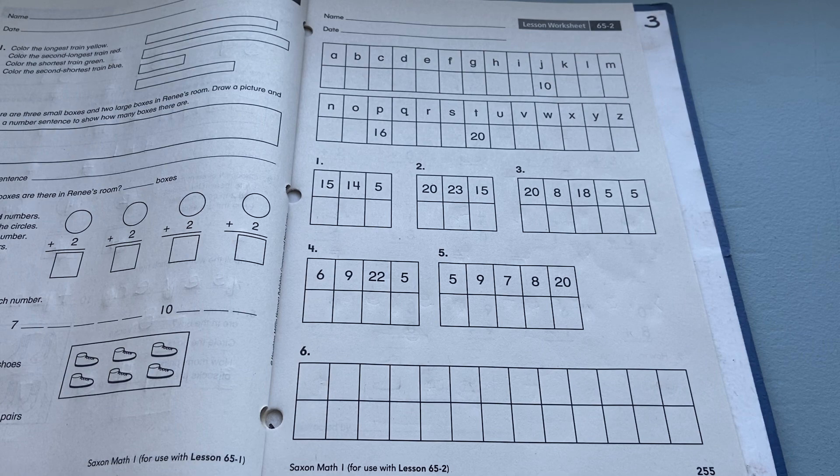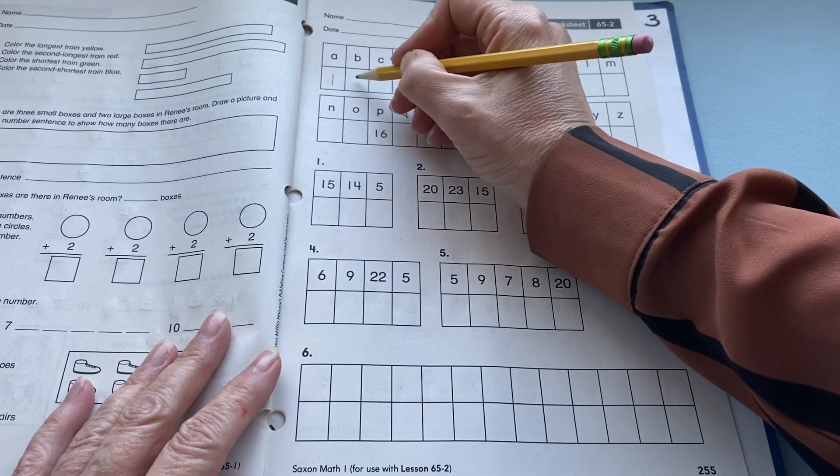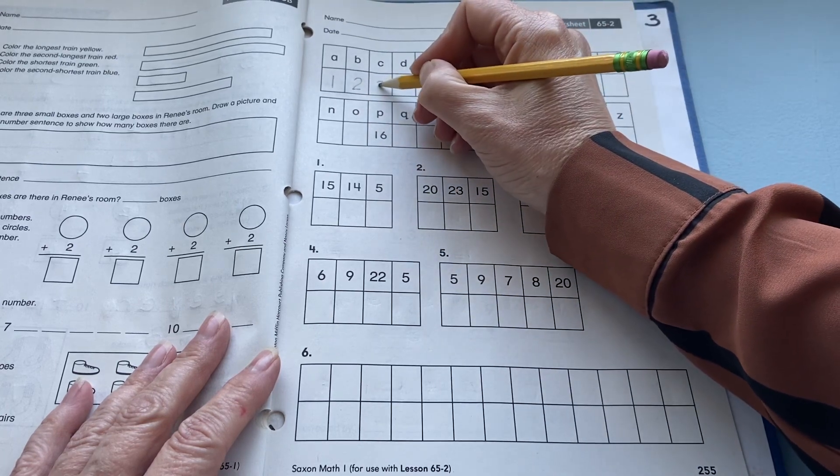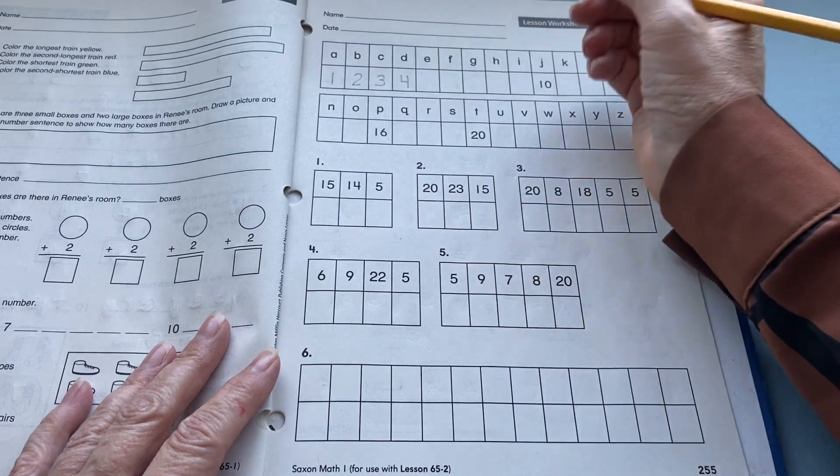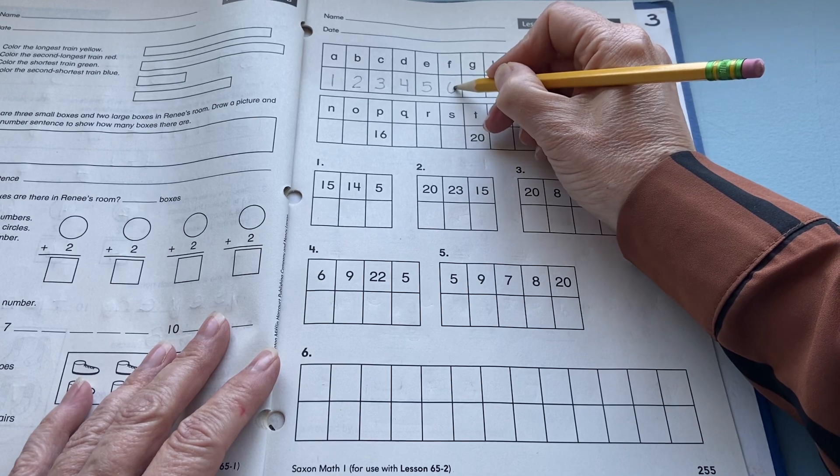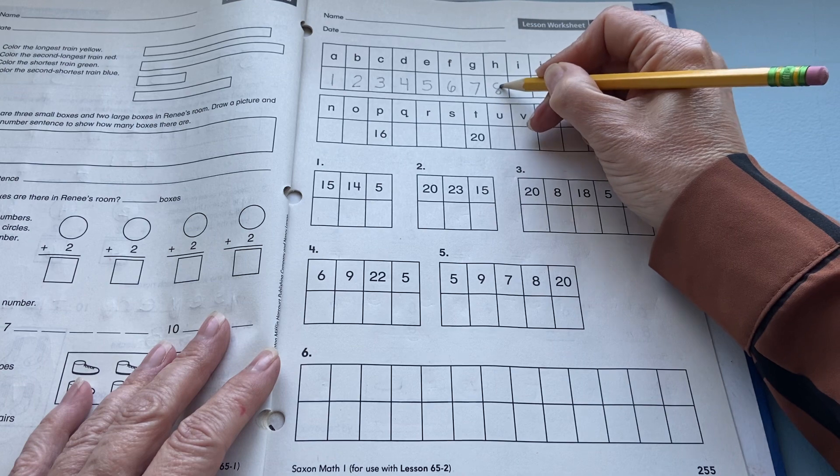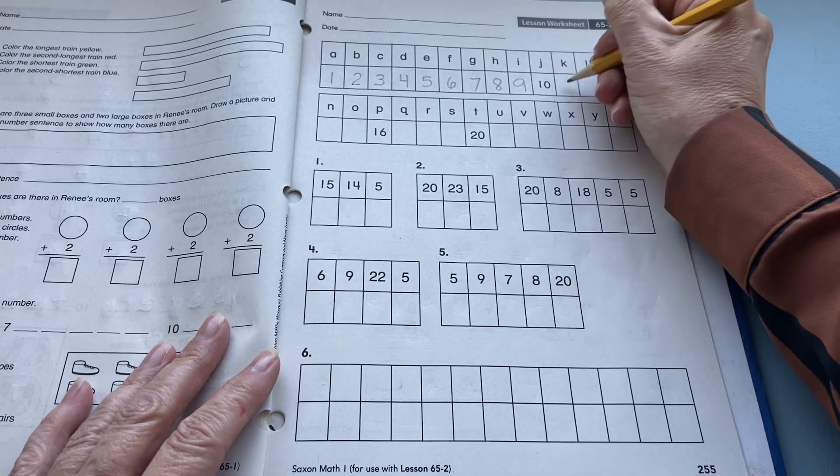So, let's start with 1. Okay, so 1, 2, 3, 4, 5, 6, 7, 8, 9, the 10 is there.